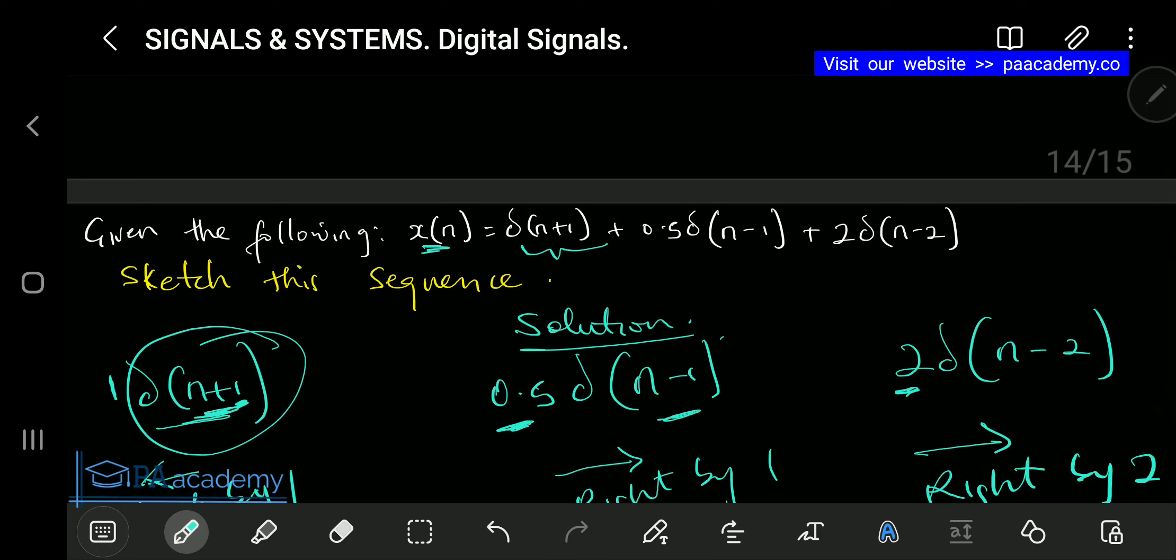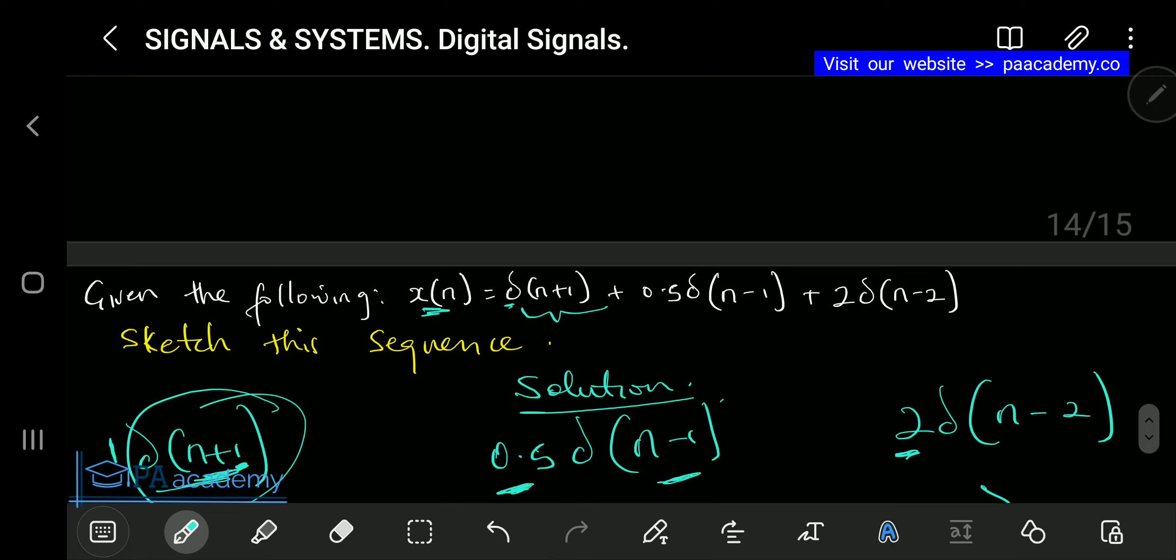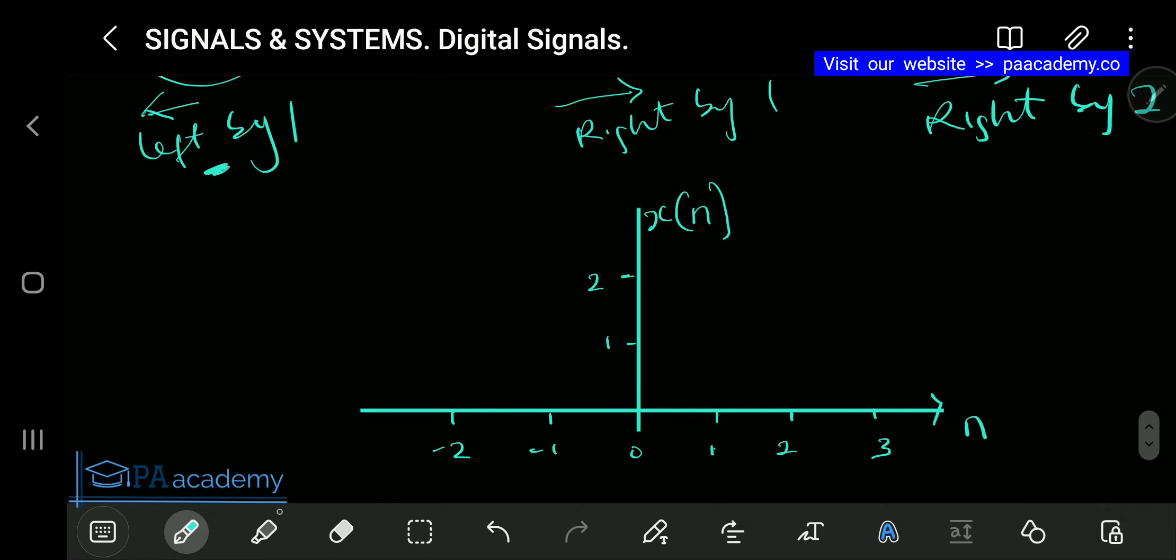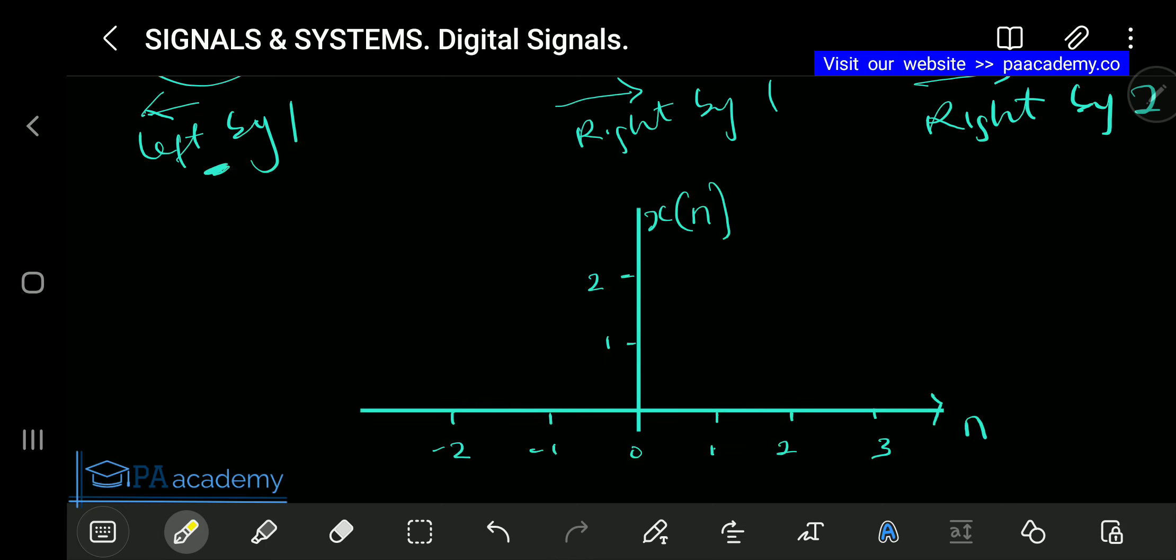Now let's sketch it. Let's start from this. This is δ(n+1). Like I said, as I've explained it here, it's going to be shifted to the left by 1, and the amplitude here is 1. You can see there's nothing before it, but you can tell just like we have 1. For us to draw this, that means it's going to be like this. So this is 1.